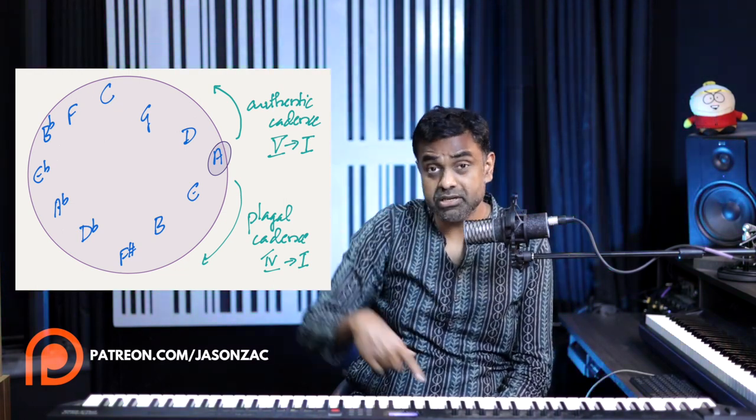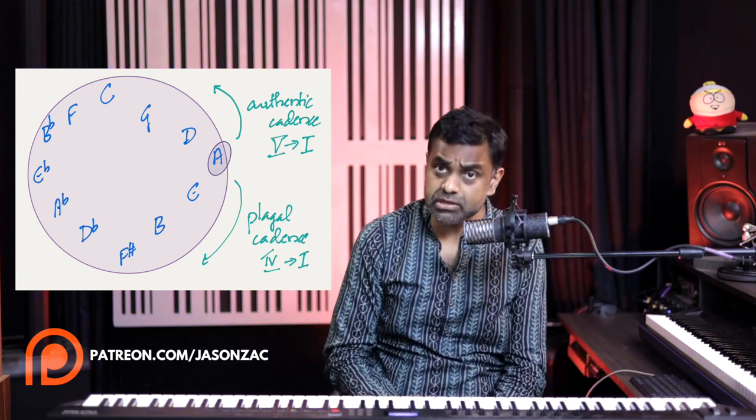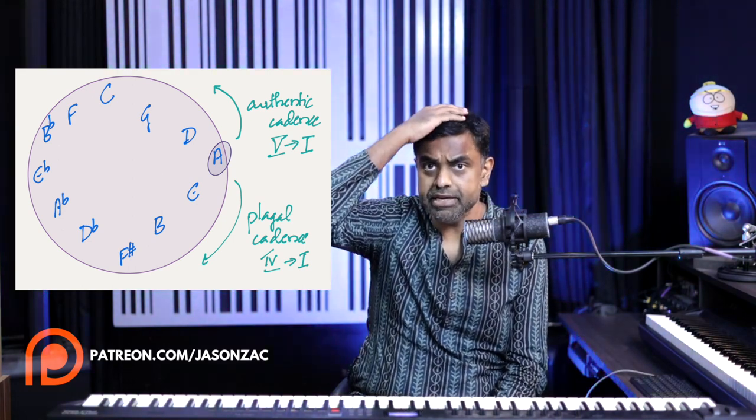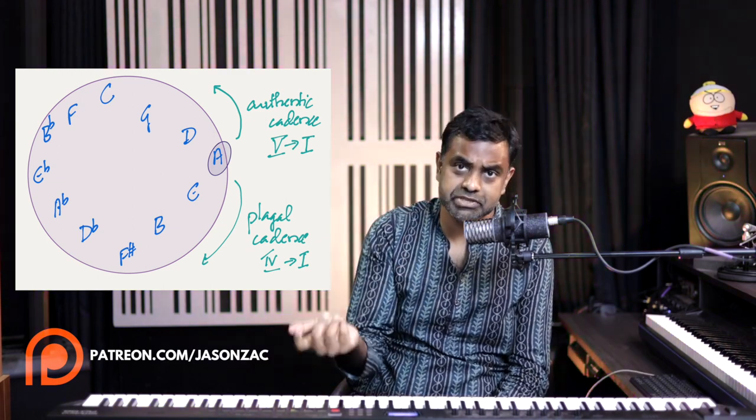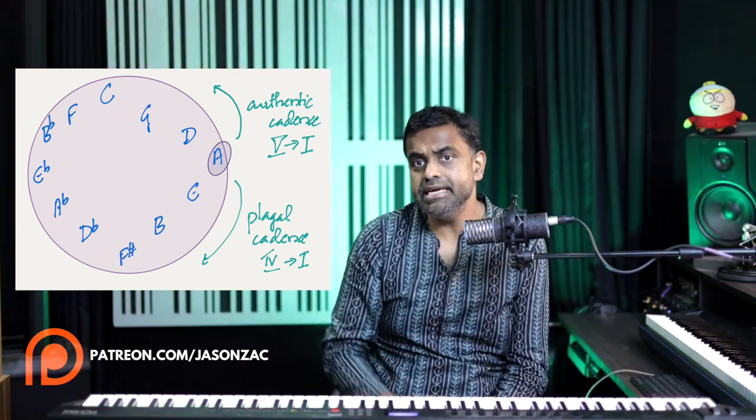That is counting it in the clockwise direction. If you count it in the counterclockwise direction, it's going to be C, F, B flat, E flat, A flat, D flat, G flat (also known as F sharp), B, E, A, D, G, C.